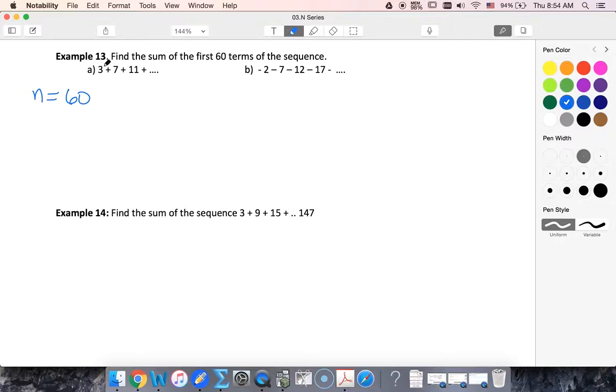So in this case my d value is going to be 4. I can either go straight to using my sum formula or I could find u sub 60 first. I'm going to go straight to the sum formula: 60 over 2 times 2 of the first term plus my n is 60 so n minus 1 is 59 and my common difference is 4.